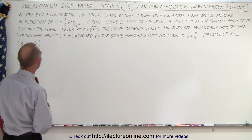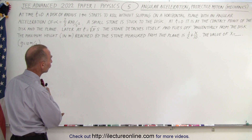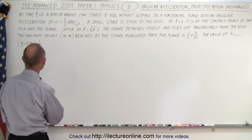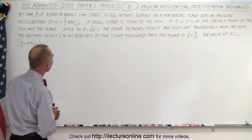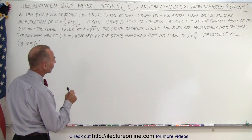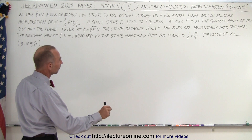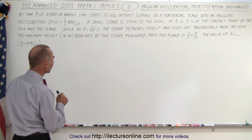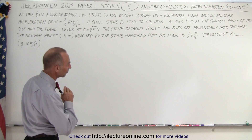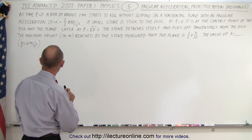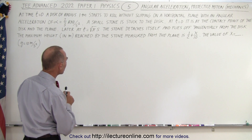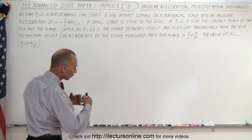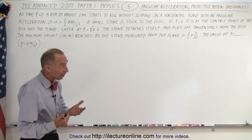At time t equals zero, a disk of radius one meter starts to roll without slipping on a horizontal plane with an angular acceleration of alpha equals two-thirds radians per second squared. A small stone is stuck to the disk. At t equals zero it is at the contact point of the disk and the plane. Later, at t equals the square root of pi seconds, the stone detaches itself and flies off tangentially from the disk. The maximum height in meters reached by the stone, measured from the plane, is one-half plus x over ten. The value of x is what we're trying to find.